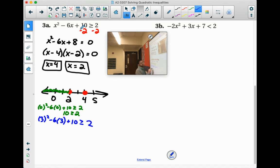3 squared is 9. 6 times 3 is 18. 9 minus 18 is negative 9 plus 10 is positive 1. And 1 is not greater than or equal to 2. So it's not going to include those.